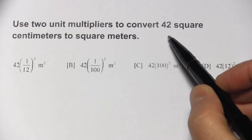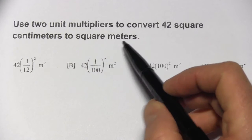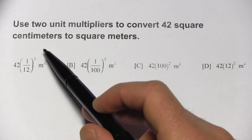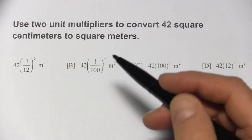In this first one, we want to convert 42 square centimeters into square meters. So first of all, you need to know the relationship of centimeters to meters. And if you don't know how many centimeters are in a meter, just look it up on the internet.